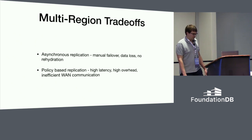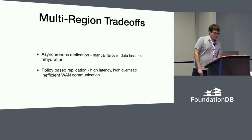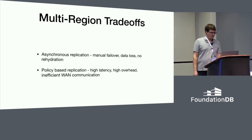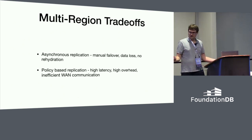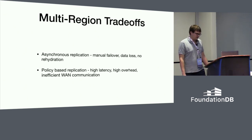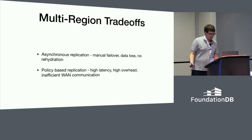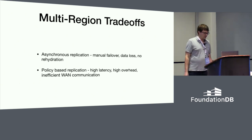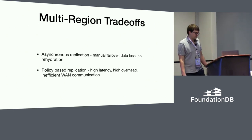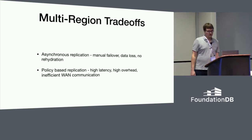So basically that's where we were at 5.2. We had the asynchronous replication option with manual failover and potential data loss, where the two sides didn't really cooperate. And we also had this three data center mode — policy-based replication — with high cross-region latencies, high overhead, lots more storage replicas, and inefficient WAN communication. The goal with the 6.0 release was really to combine these approaches into something unique and special.